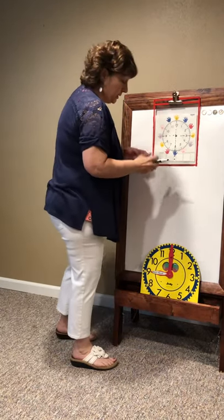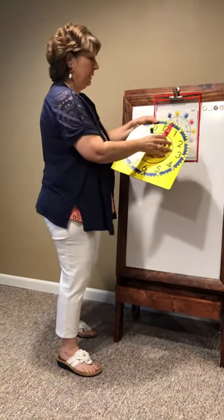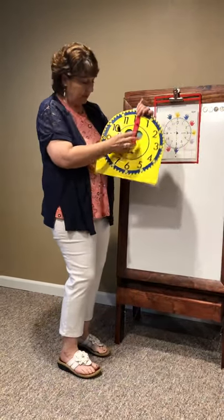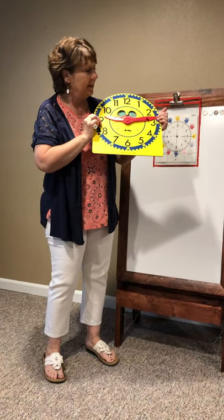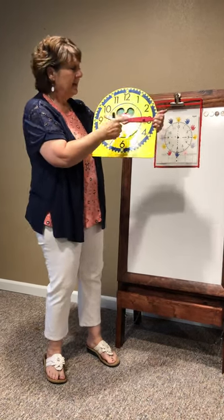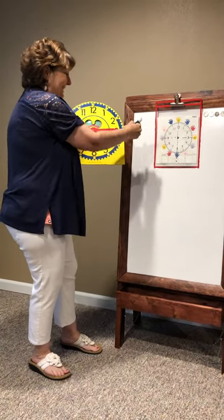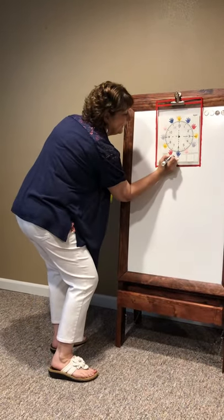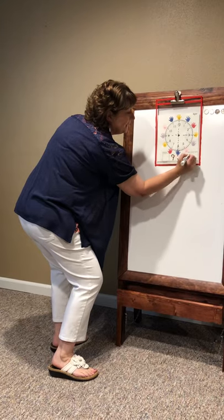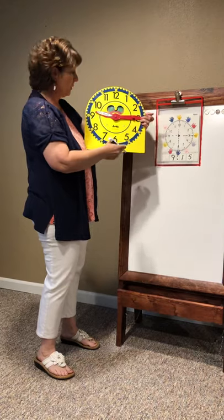If I put my clock at the 9 — here's my hour hand, here's my minute hand — and if I go 5, 10, 15, this is 15 minutes after nine, or 9:15, which is a quarter past the hour. If you notice, the hour hand is just a little bit after the nine.